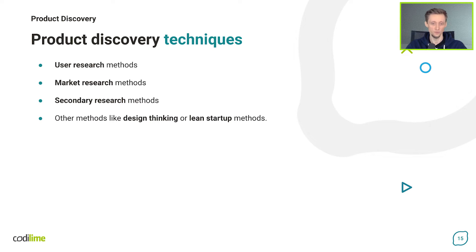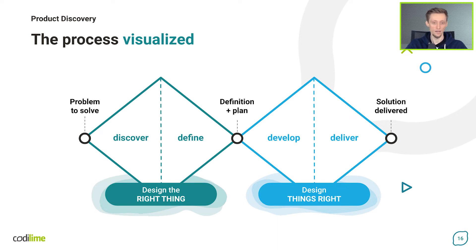Design thinking is an approach often used in creating new products. It's about gathering data about the target audience's needs and producing creative ideas to meet them. This technique is mostly focused on finding a solution that is desirable from a human perspective and at the same time viable technically and financially. Lean startup methods are used to reduce waste within a business. They give a holistic view of the organization and let you analyze how different aspects influence each other. You can address your product directly to user problems.